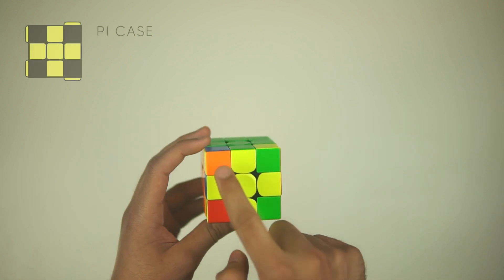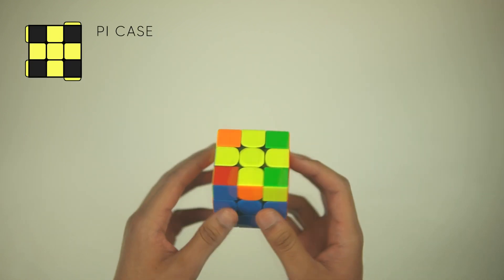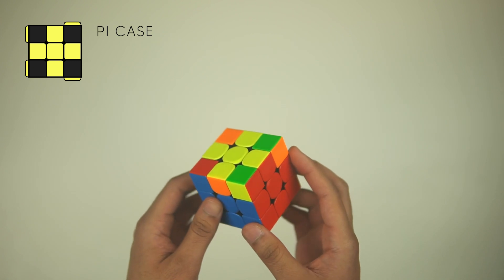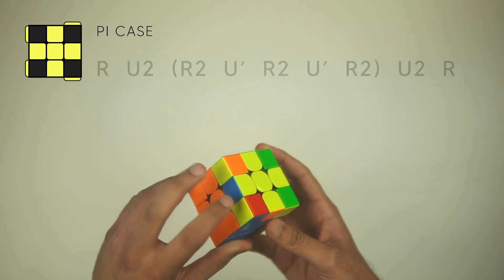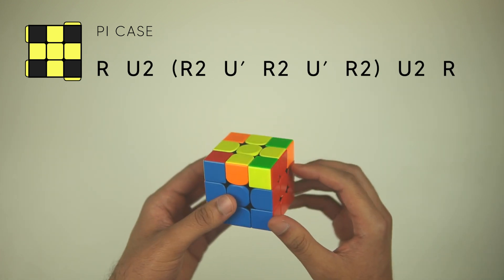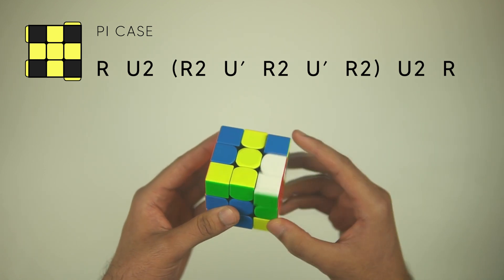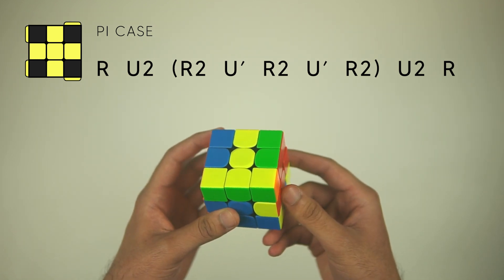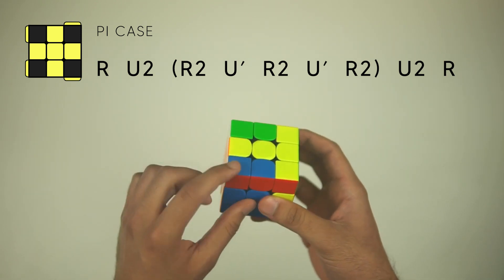Next, we have the Pi case. Again this one has no yellow corners on the top. It's got the headlights on the left, but there's no headlights on the right. Instead, we have these two opposing yellow pieces here, and then just the single headlights there. So to solve the Pi case, we're going to do an R, U2, R2, U', and notice how these two F2L pairs have been created like this.